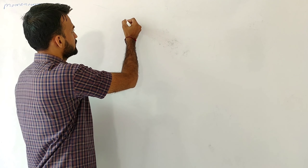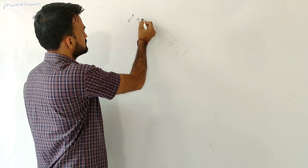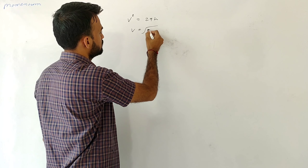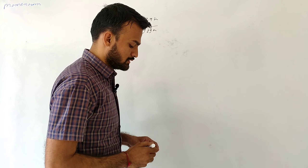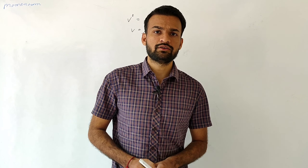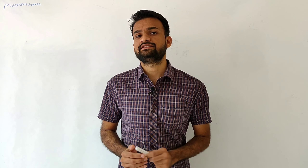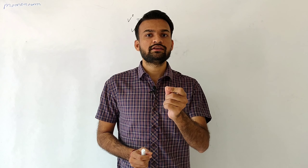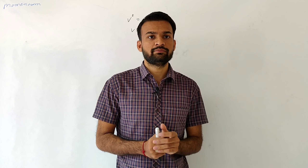Since both are dropped from the same height, the velocity v is equal to √(2gh). So the velocity of both stones is the same, but the mass is different. Therefore the heavier stone is able to break the glass pane while the lighter one is not.